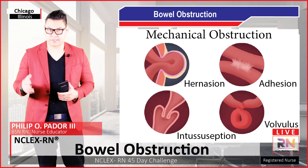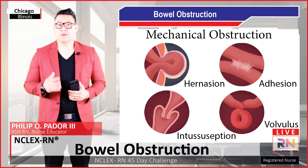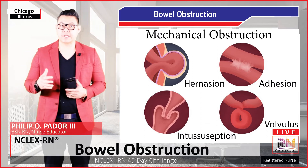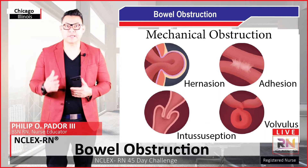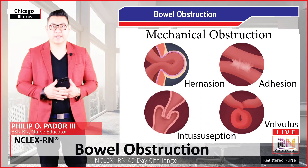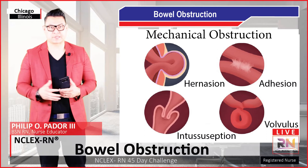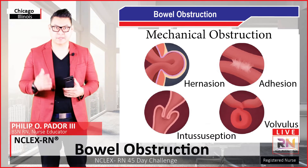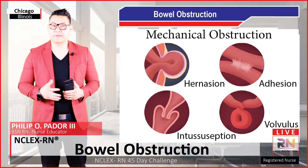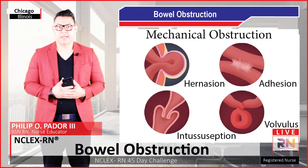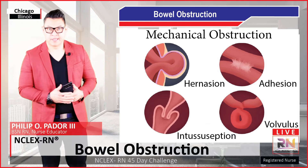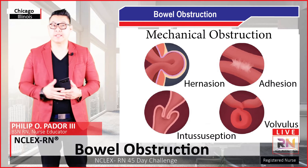There are five main types of mechanical obstructions. The first and most common is known as adhesions — where two parts of the bowel are connected with each other by fibrous bands, causing an obstruction. Another common type is a tumor or cancer growth within the bowel itself. Another type is intussusception — where a part of the bowel invaginates itself. The part that goes into the other part is known as the intussusceptum, and the part surrounding it on the outside is known as the intussusception.